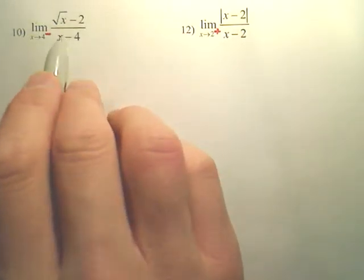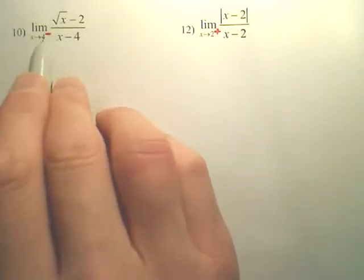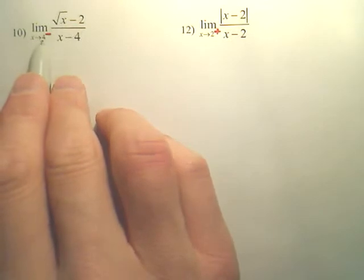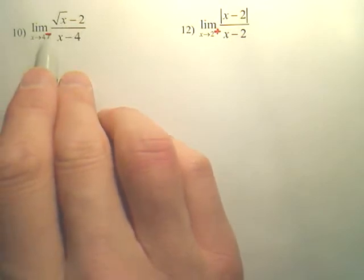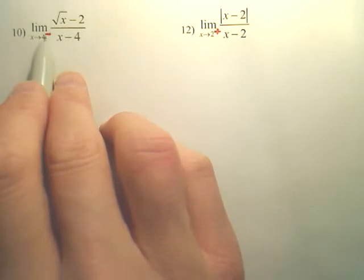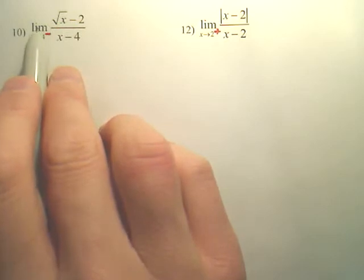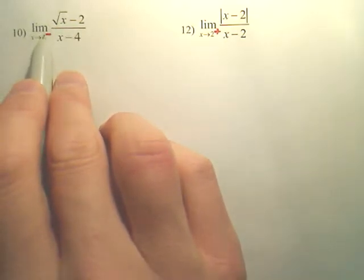All right, yes, we are recording this, and number 10, I want to find the limit as we approach 4 from the negative side. Now, you actually can ignore that negative to start with, because we first want to see what's the limit as it approaches 4. If that does not exist, then you pay attention to the negative.